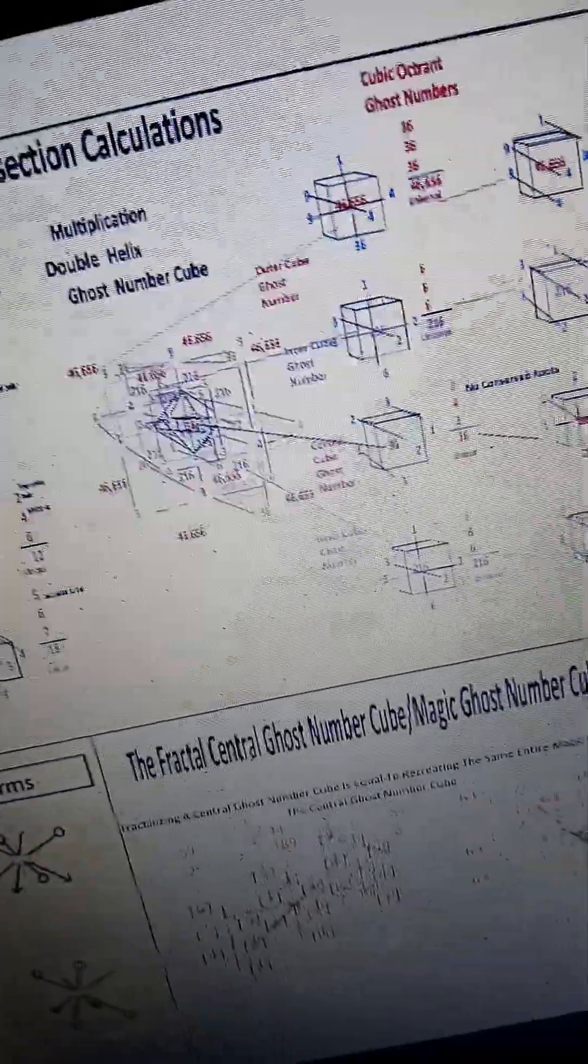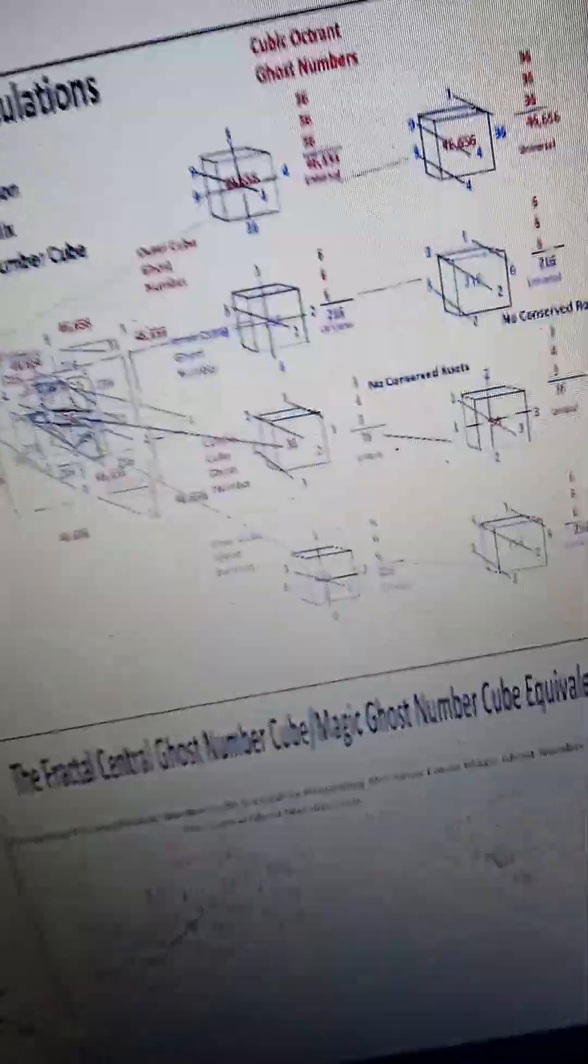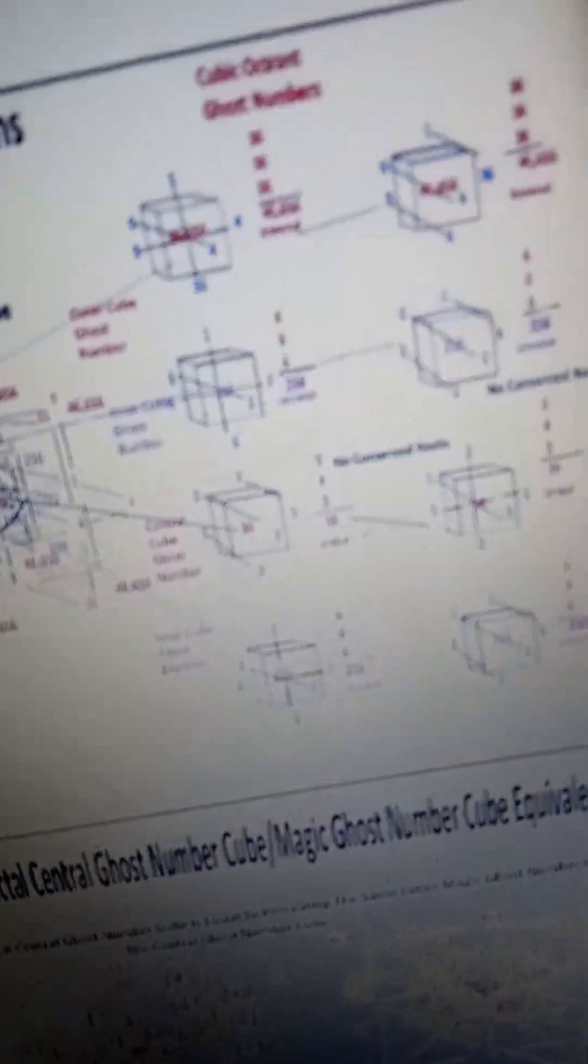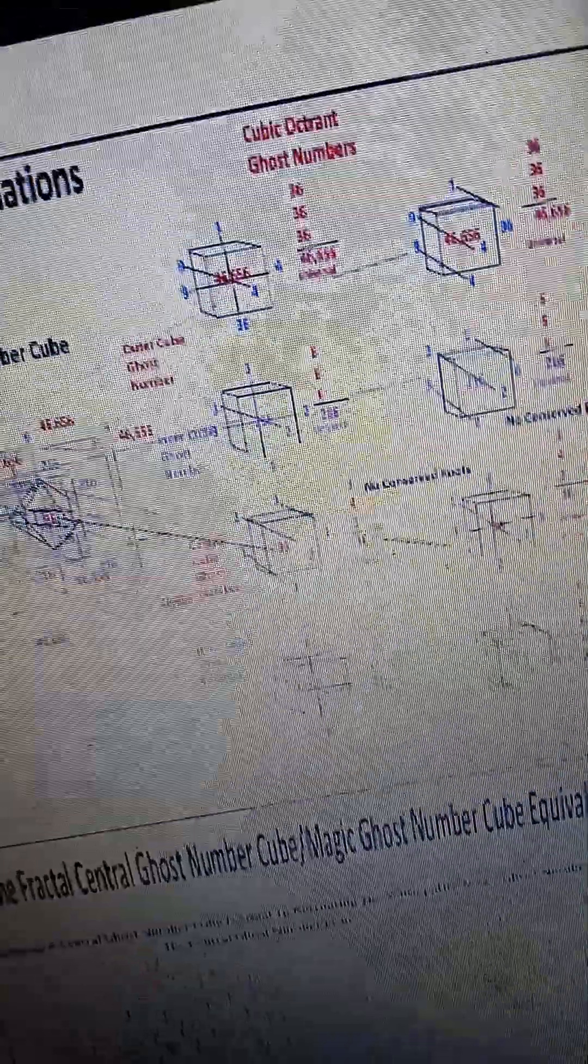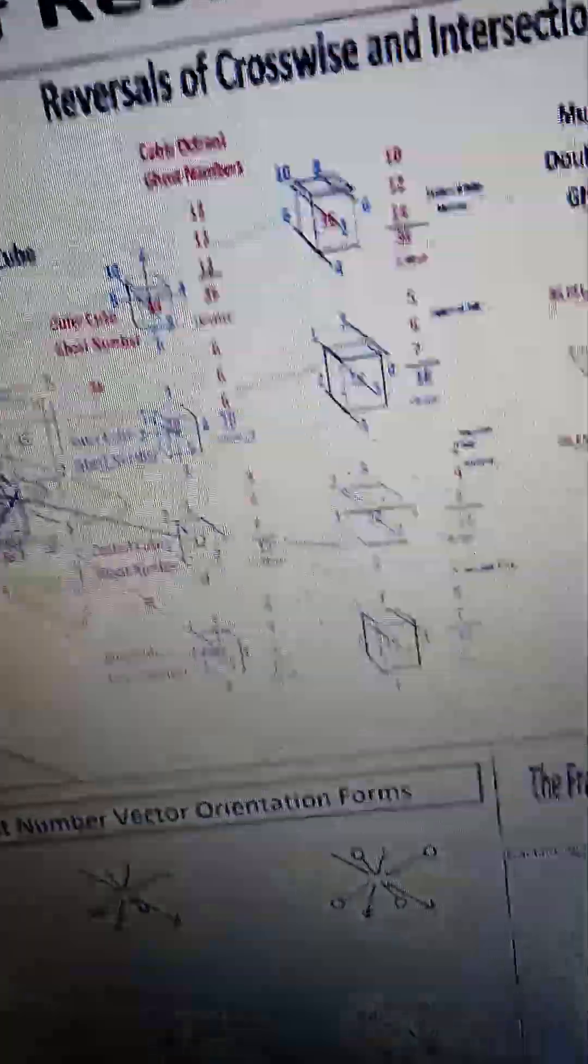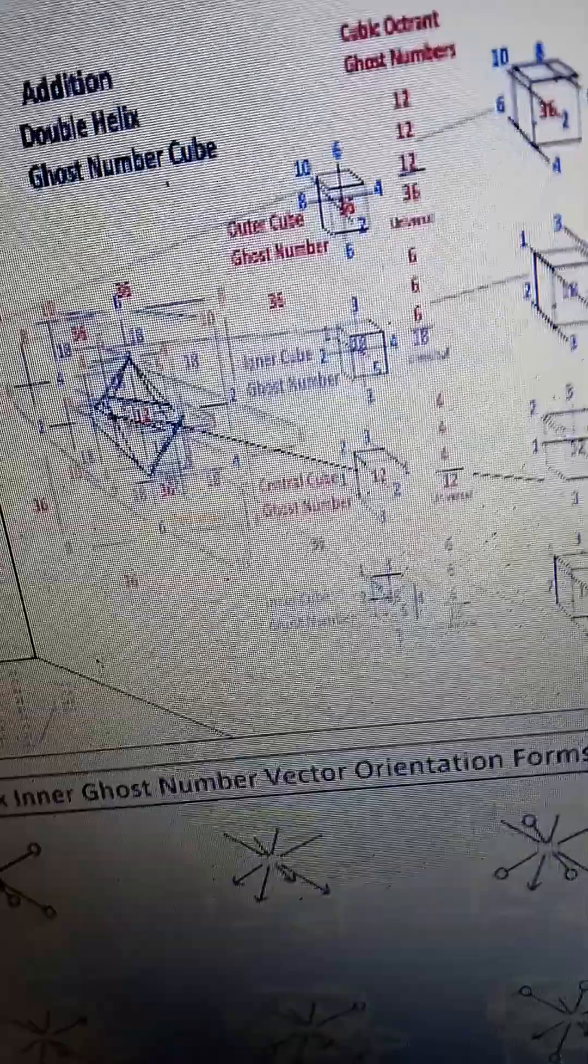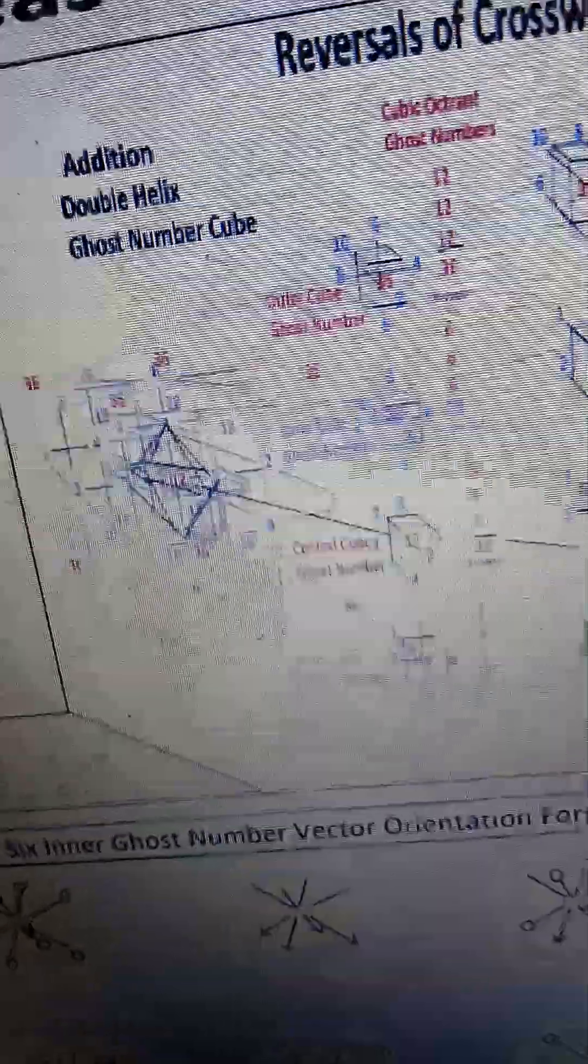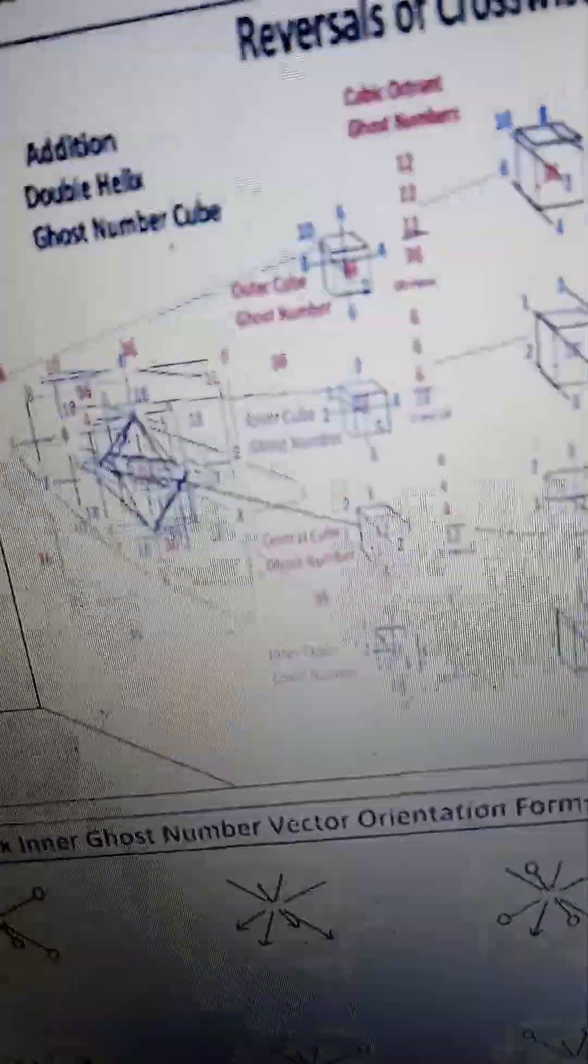These are the reversals of the crosswise and the intersection calculations of the cubic octrons. The universals and the uniques and their reversed forms. Intersections to cross sections or intersections crosswise. This is a double helix cube in addition form.